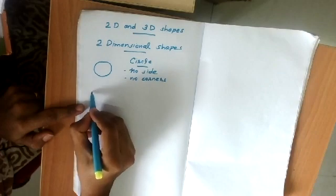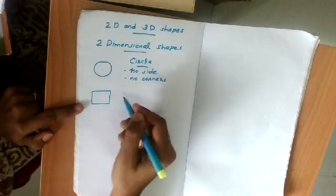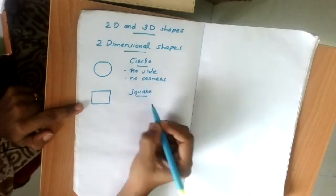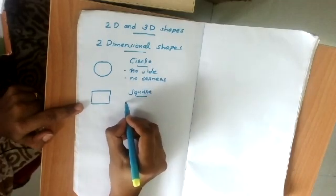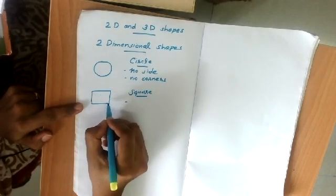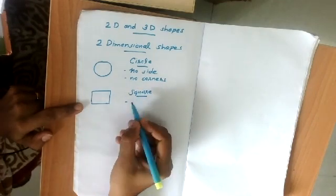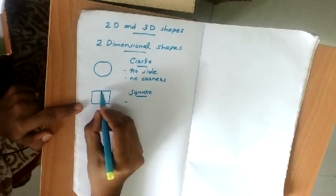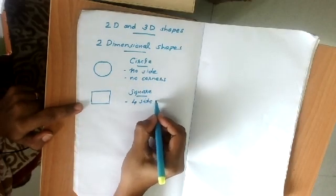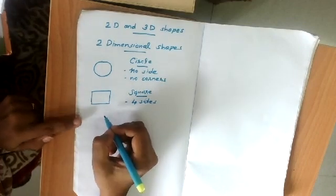The next 2D shape is the square. All four sides of a square are the same in size. By using four straight lines we can draw a square. There are four sides and four corners in a square.